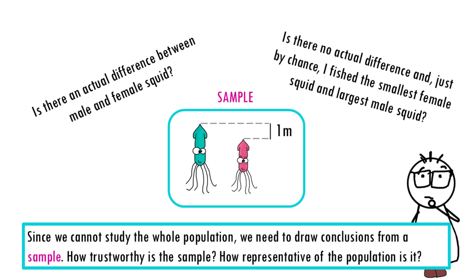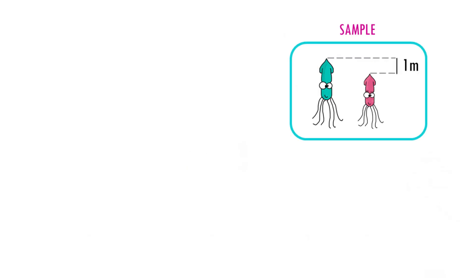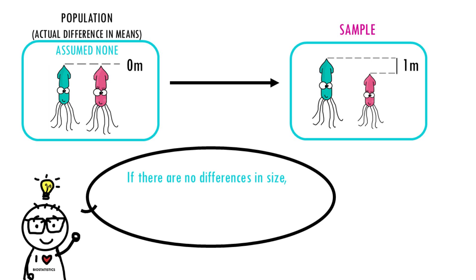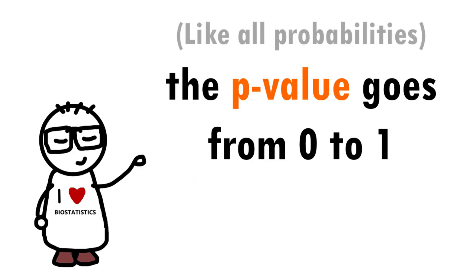As you very well know as a biostatistician, all you can do is calculate the probability of observing a difference between sample means in an experiment of the studied sample size, if in fact there are no differences at all between the size of female and male squid. Essentially, we calculate the probability of getting the result we got, the difference in means, if there is no difference at all. This probability is the p-value, and like all probabilities it goes from 0 to 1.